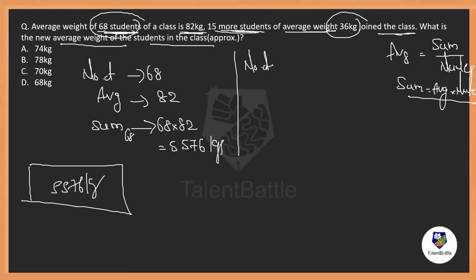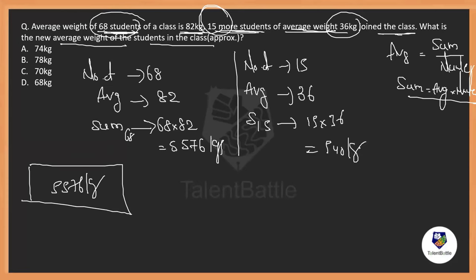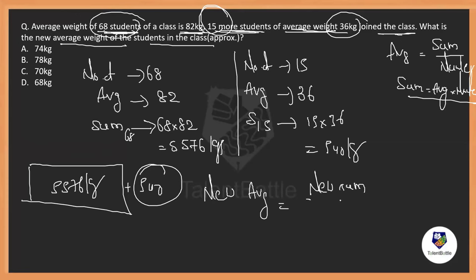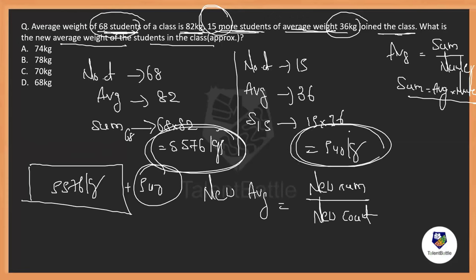Now 15 new people are added with an average of 36. So the sum of the 15 students is number into average: 15 into 36, which is 540. These 540 cases are added to the original group. The new average will be equal to the new sum divided by the new count of people. Adding both sums: 5576 plus 540 equals 6116.